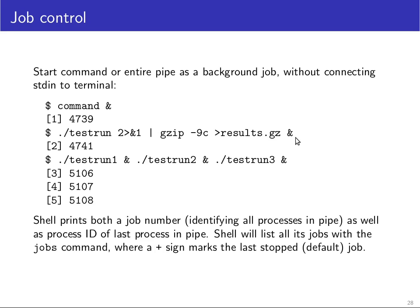You can even start several jobs in the same command line by writing several commands each followed by an ampersand. This is similar to the semicolon, but all of these will be started in parallel — the ampersand is not a separator, it follows the command. Here you can see we have created three jobs with three process IDs. The jobs command will output all jobs still running, and the default job — the one that last stopped and needs attention — is marked with a plus sign.